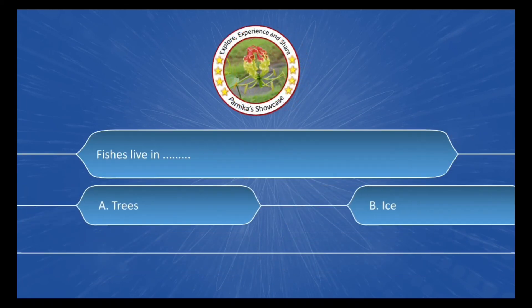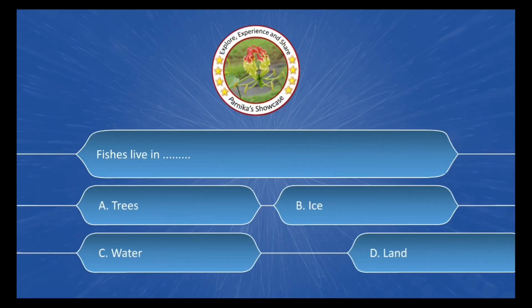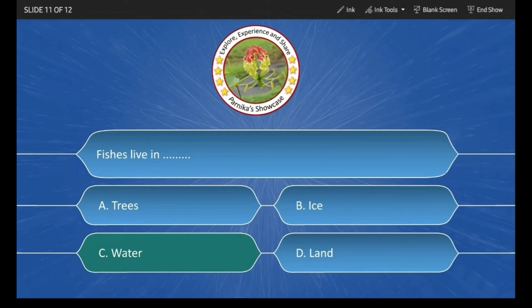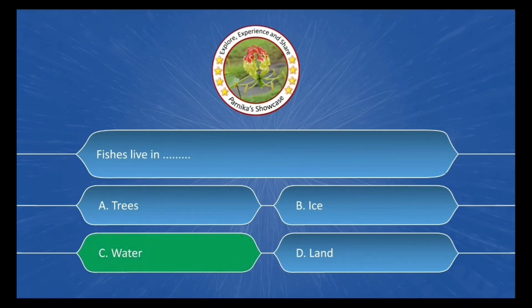Next question is: fishes live in ___, and the options are: A. Trees, B. Ice, C. Water, D. Land. And the correct answer is option C. Water.